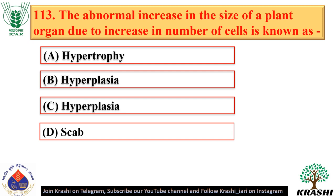Question number 113. The abnormal increase in the size of a plant organ due to an increase in the number of cells is known as hyperplasia — option C.